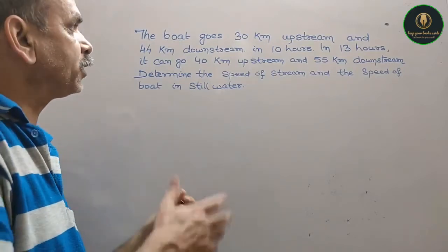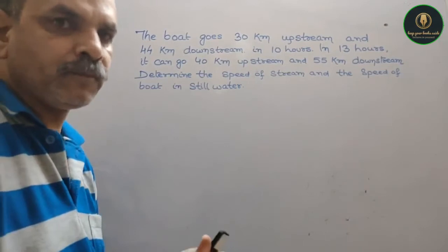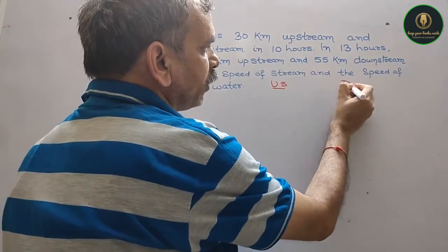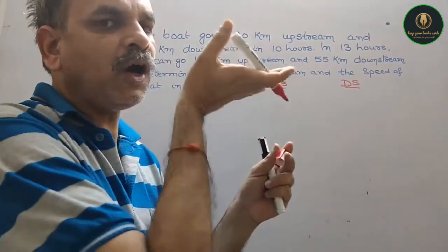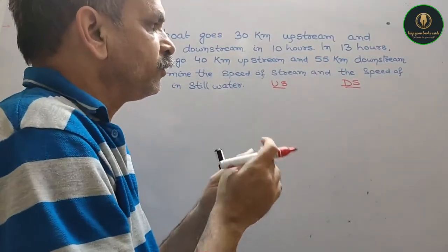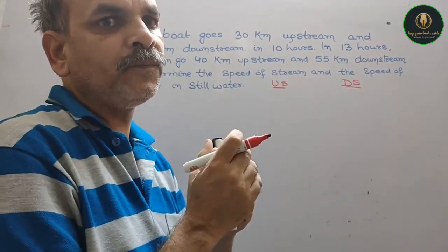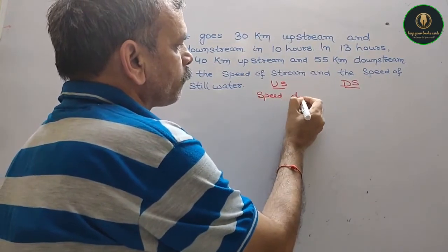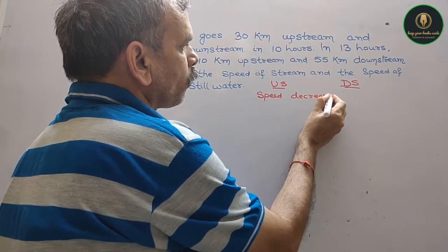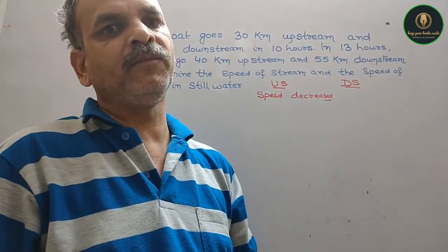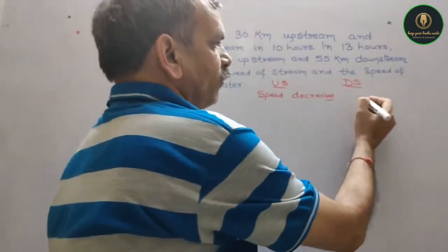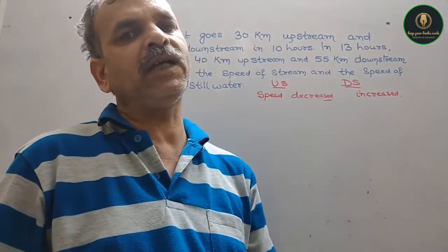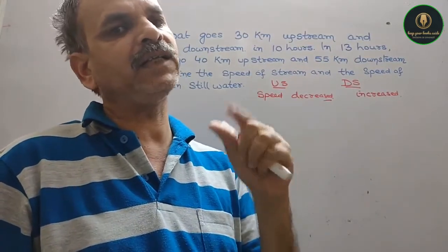So here you can see what is upstream and downstream. When we are going upwards, our speed gets decreased. And when we are going towards the downside, speed gets increased. Because if we are going towards gravity, then our speed gets increased, and against gravity the speed gets decreased.